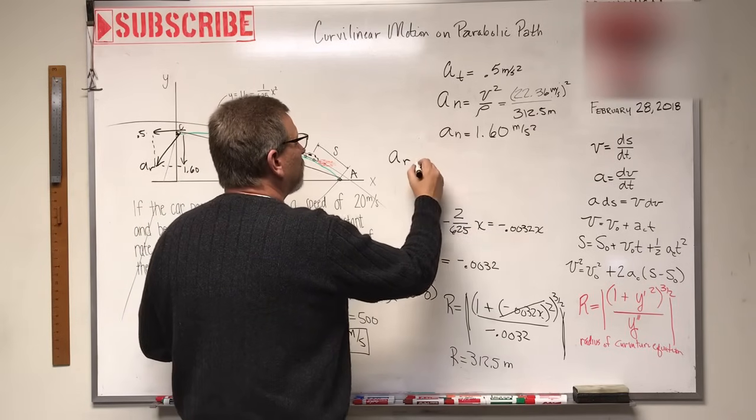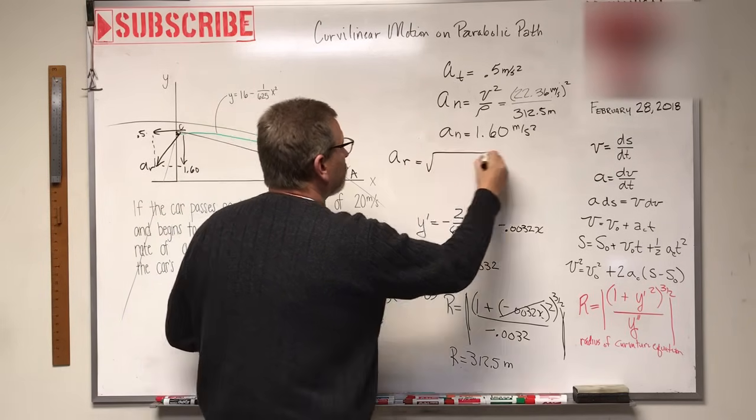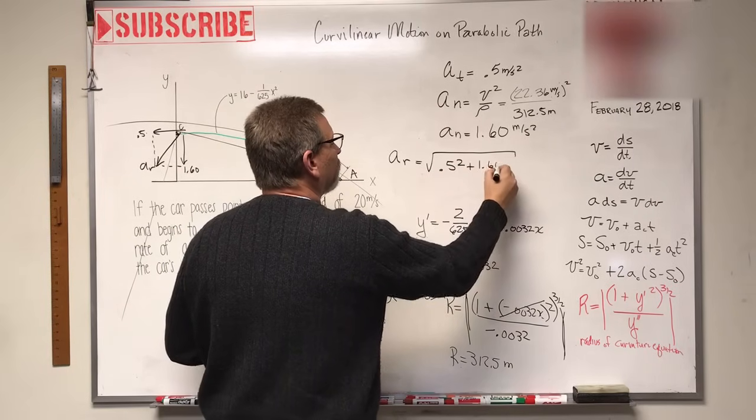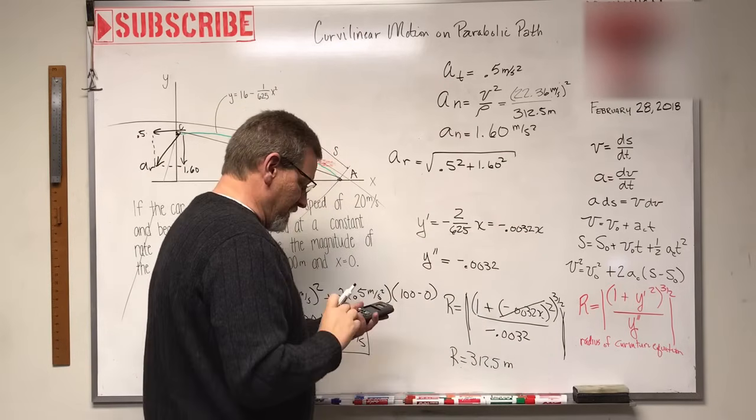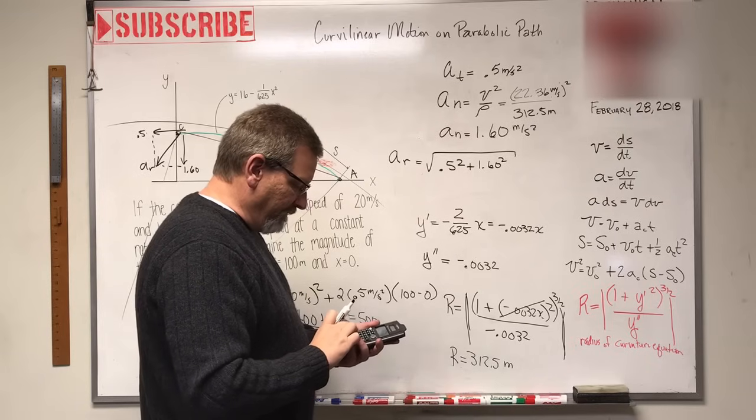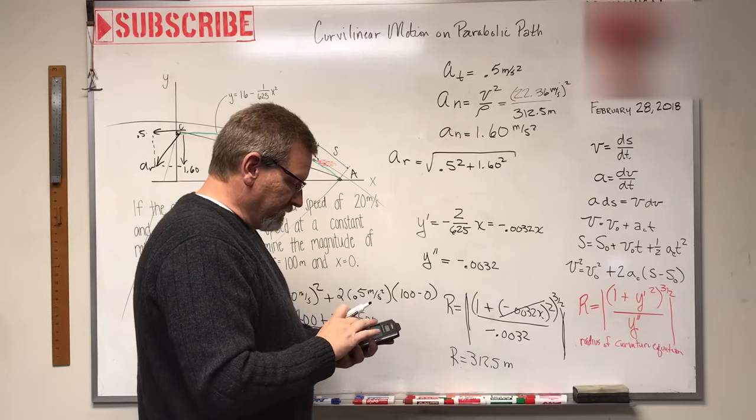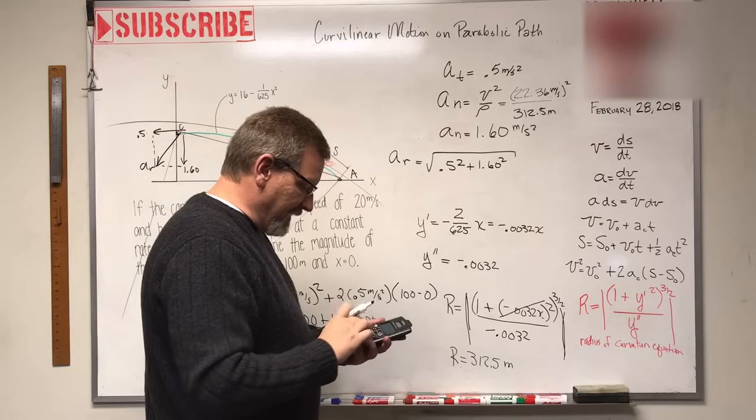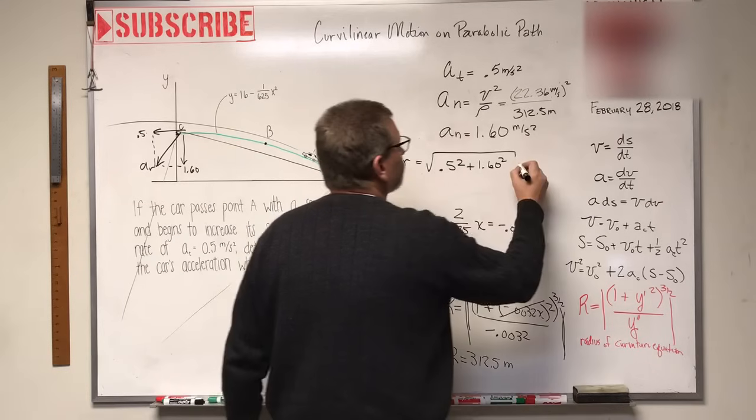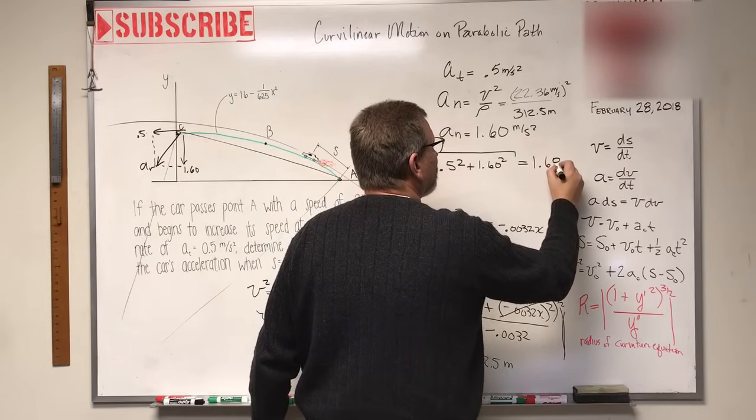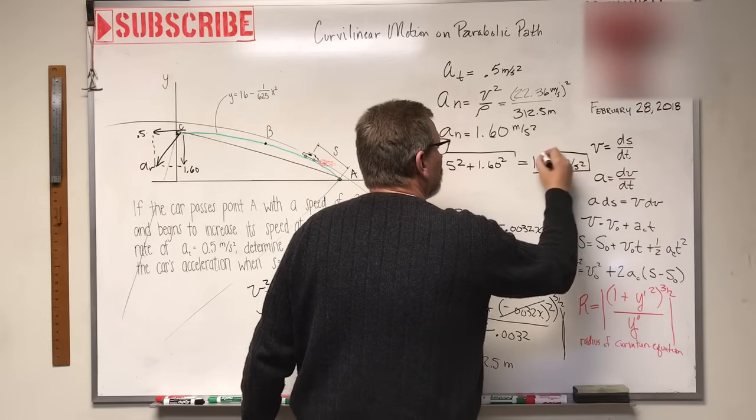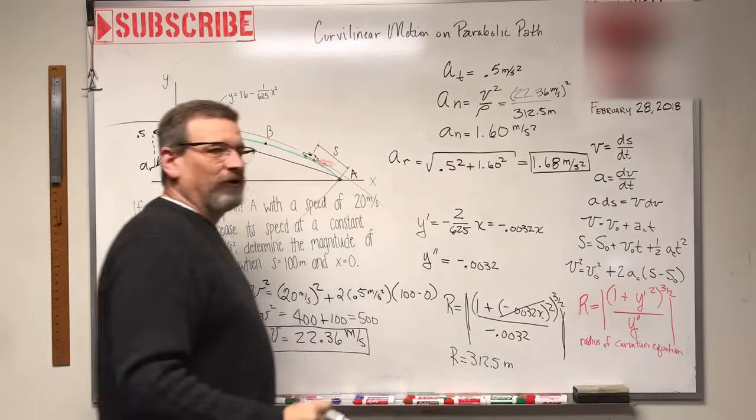Remember it's the square root of the squares - Pythagorean's theorem. 0.5 squared plus 1.60 squared, square root. Take the square root of the answer, equals 1.68 meters per second squared. That is the magnitude of the resultant acceleration.